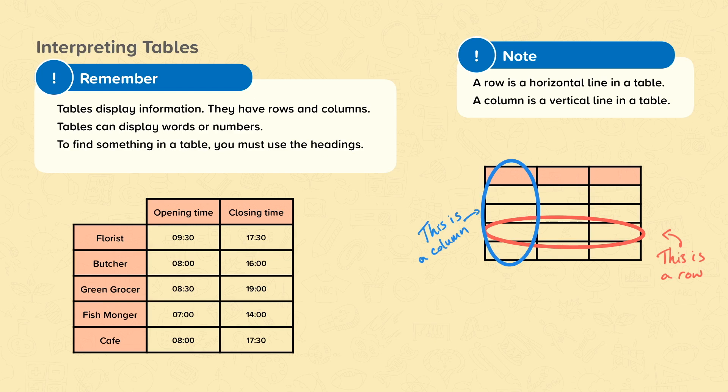Each box is called a cell. A table must also have headings. These go at the top of each column.